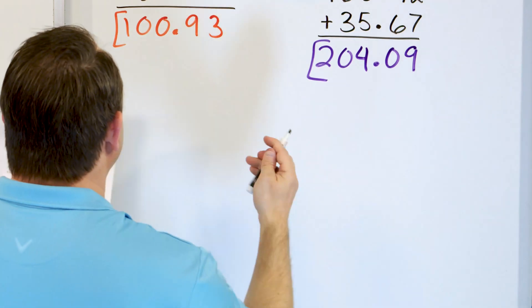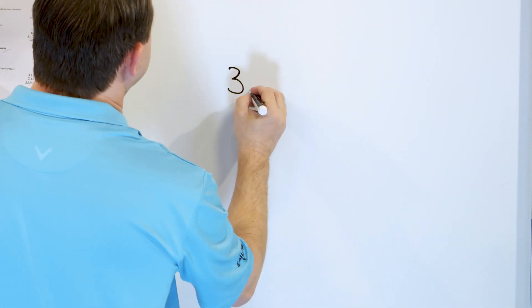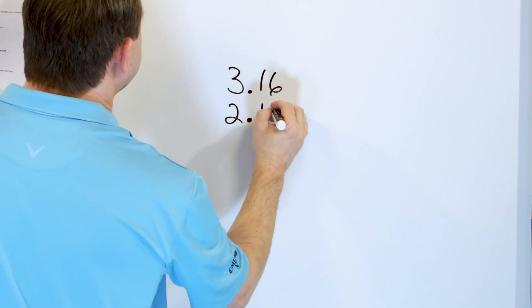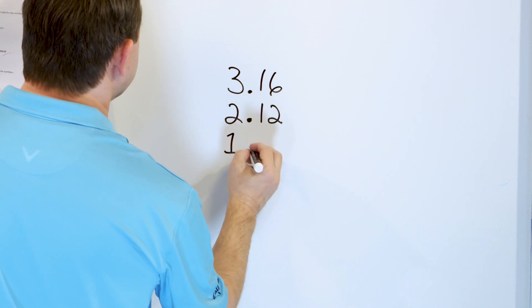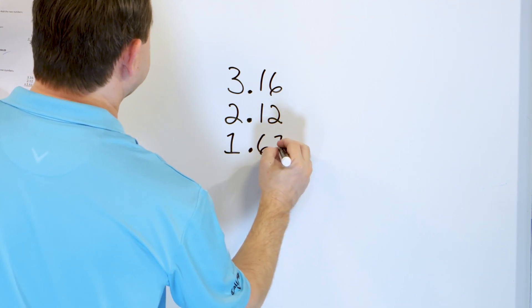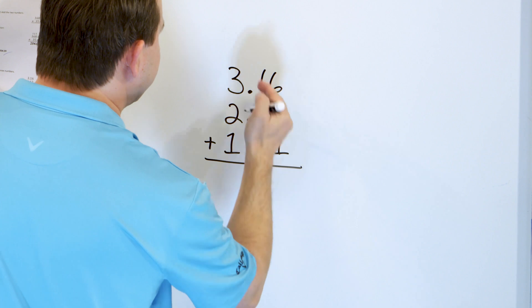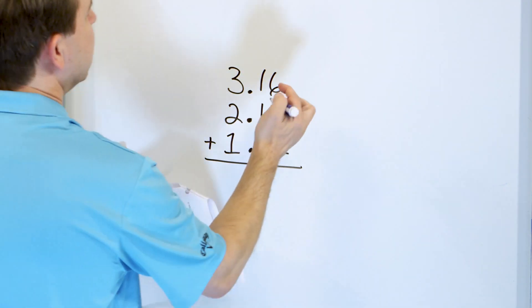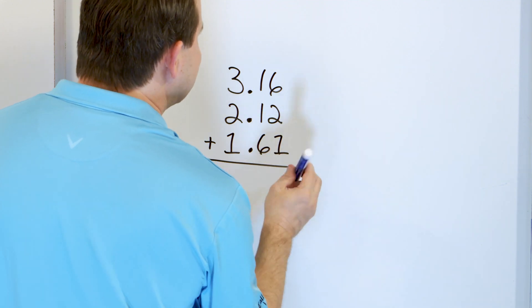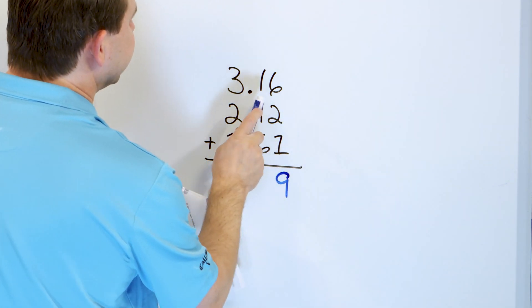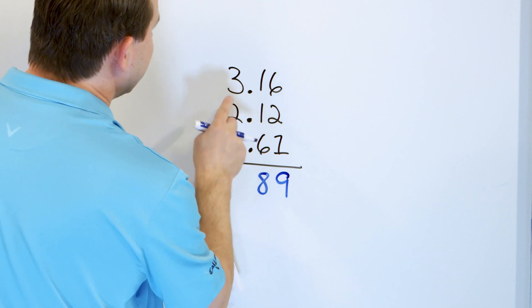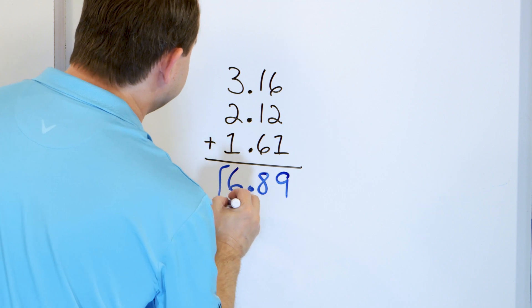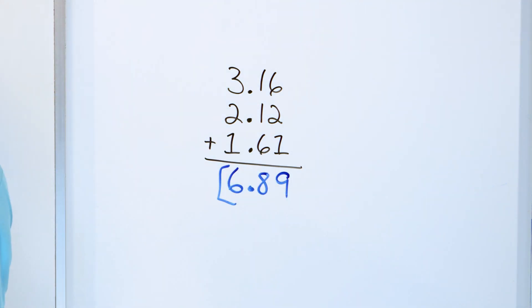Next problem, we're going to add three numbers together. 3.16. We'll add to that 2.12. We'll add to that 1.61. Now, notice again, all three decimal points are lined up. That's what we want to have every time. 6, 7, 8, 9. 9 goes here. 6, 7, 8. So, 8 goes here. 3, 4, 5, 6 goes here. And the decimal just falls right down. So, the answer is 6.89.